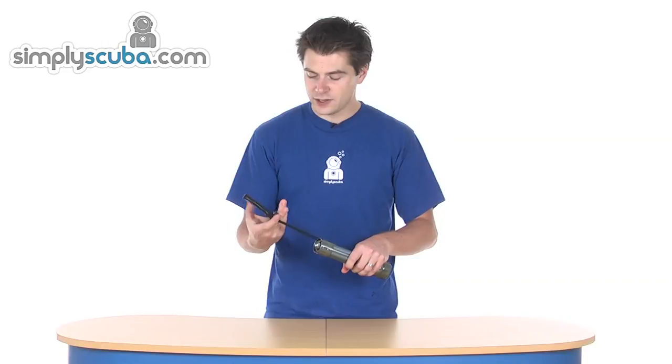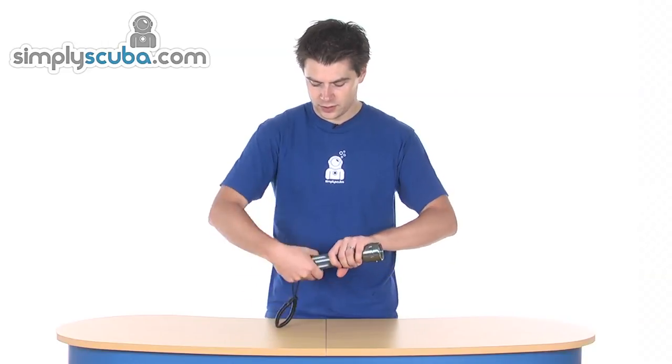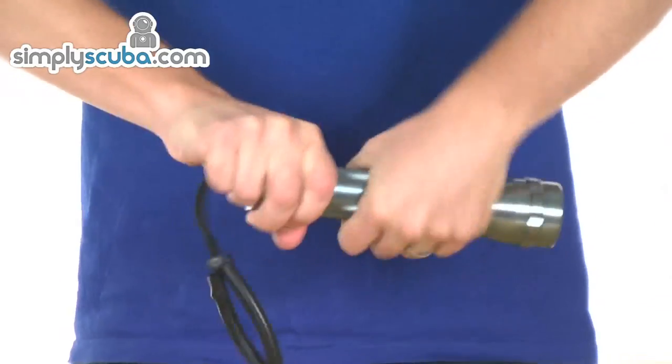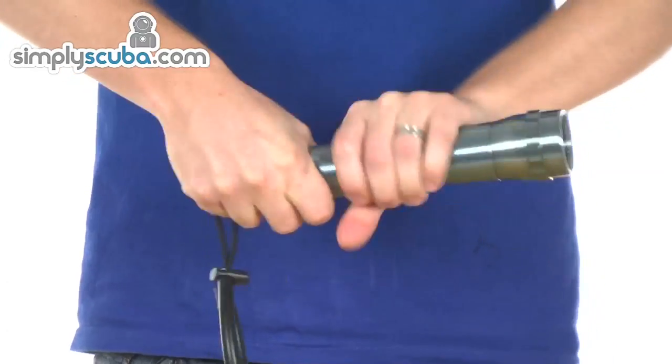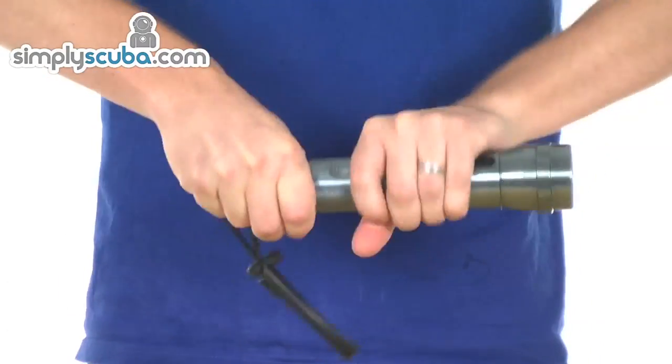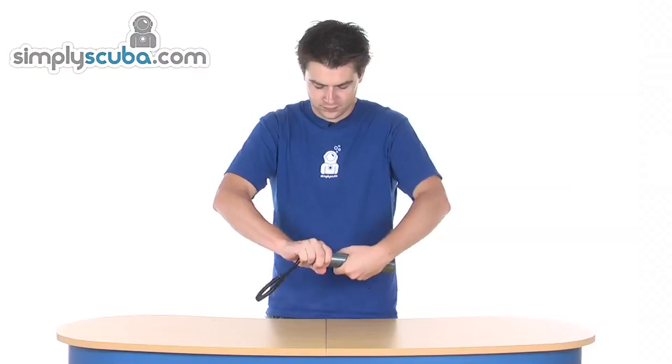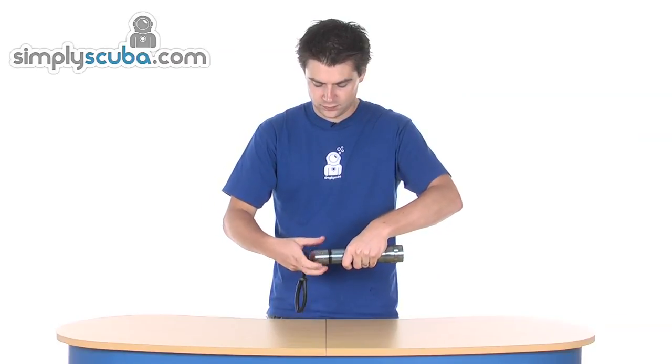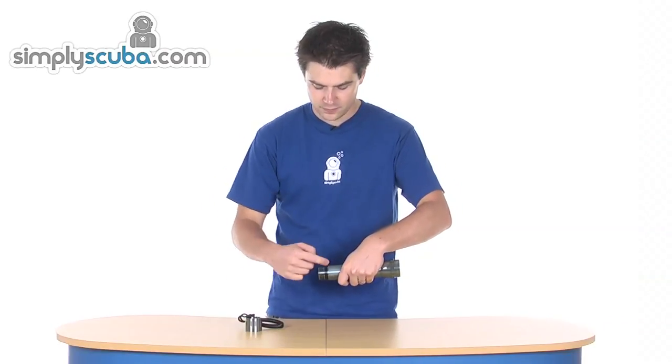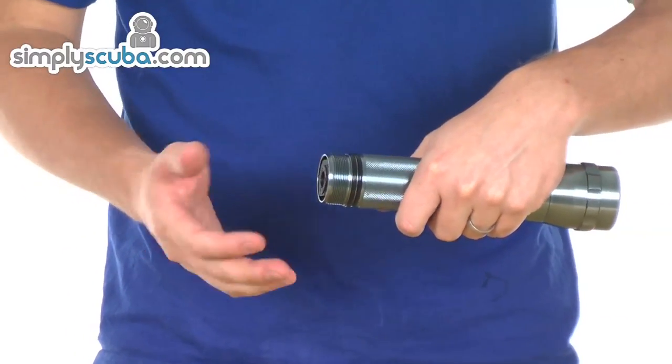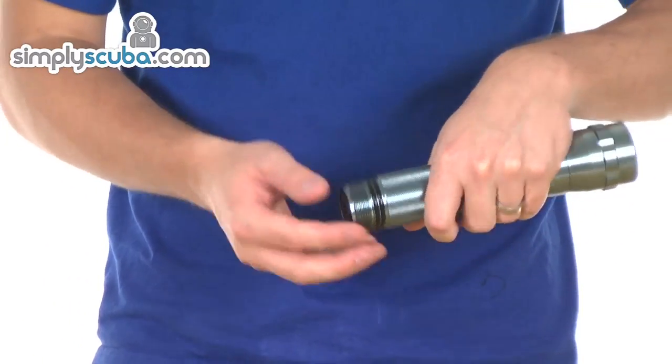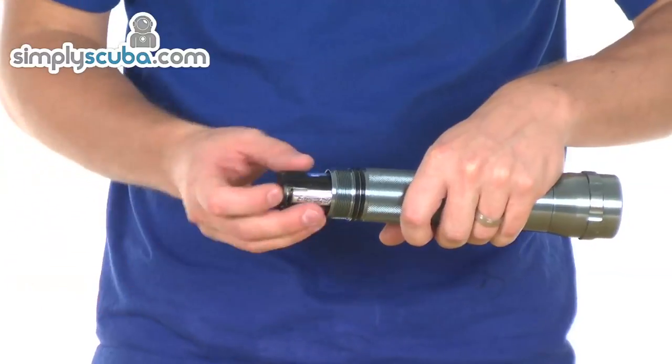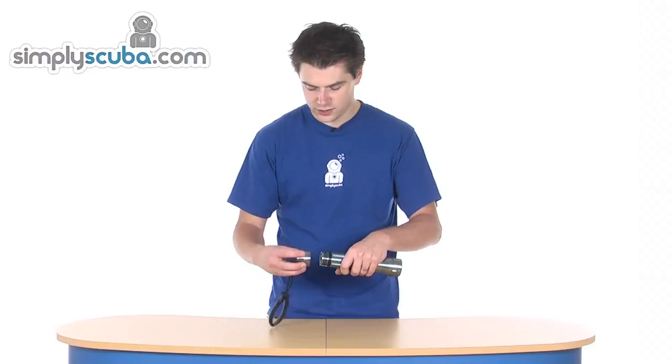It comes with a wrist lanyard supplied. To get out the batteries, just unscrew the end cap. You've got double O-ring protection there—two O-rings. Obviously, you lightly grease them to maintain them. The batteries are on a little carriage which just slides in and out nice and easy to change.